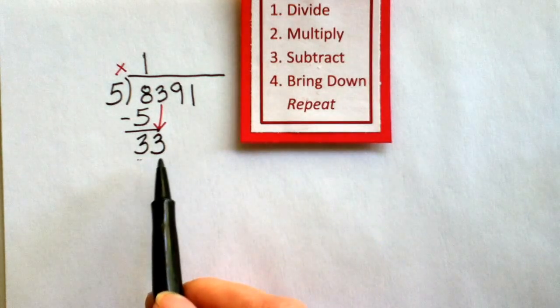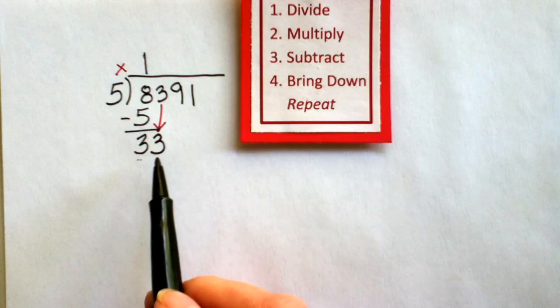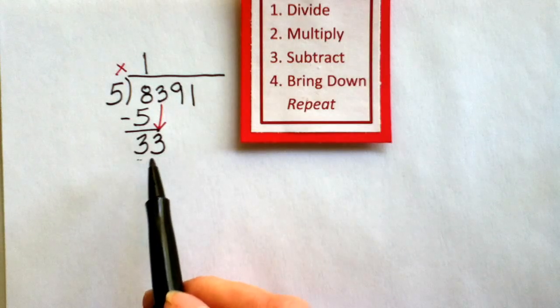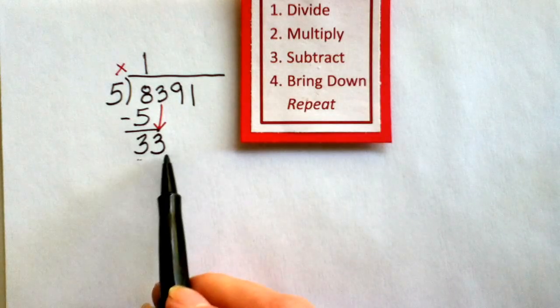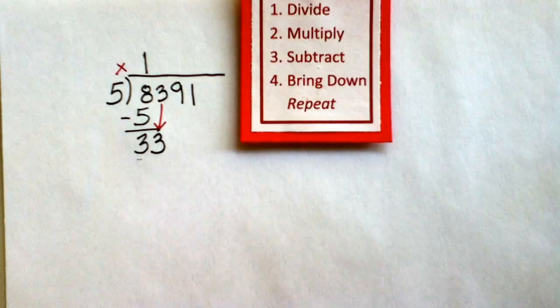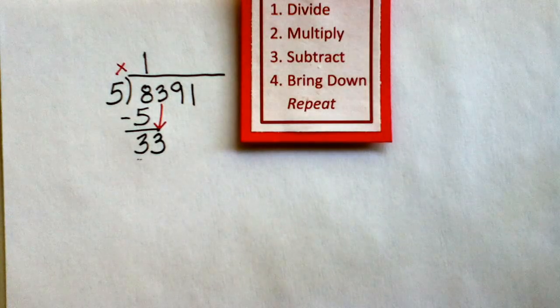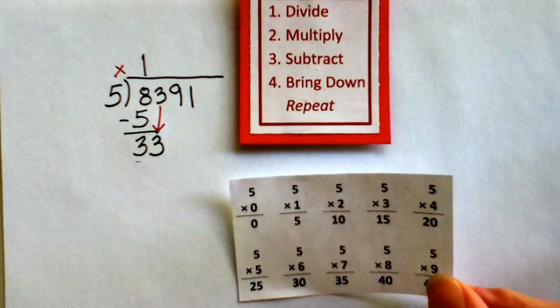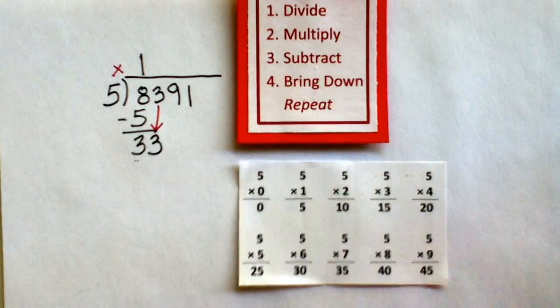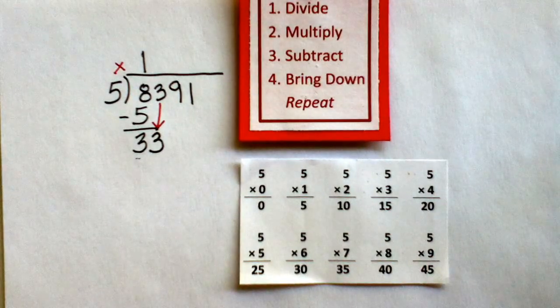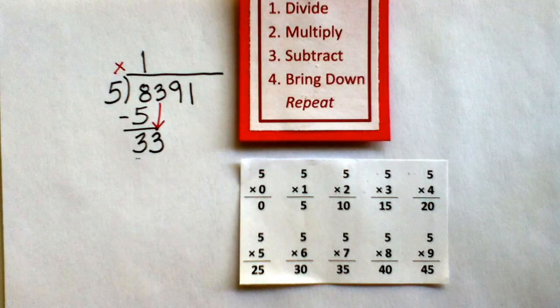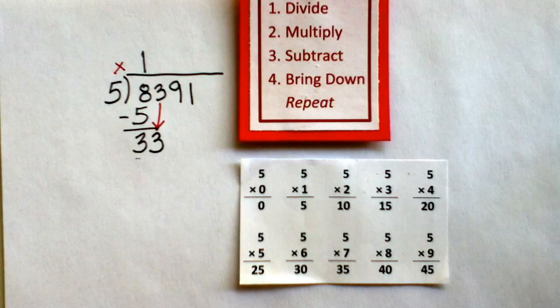Now I look at the number 33, and I repeat the process. Step 1, divide. Does 33 divide by 5? Well, yes it does. But I may not know my multiplication facts, so that's okay if you write them out ahead of time. This sheet has all the facts from 5 times 0 through 5 times 9.